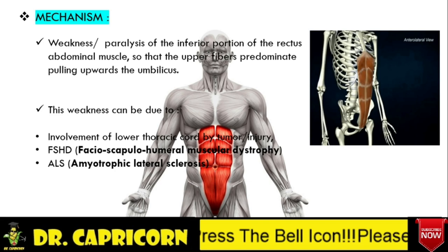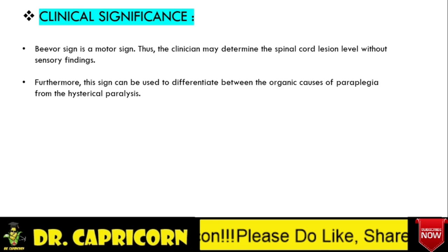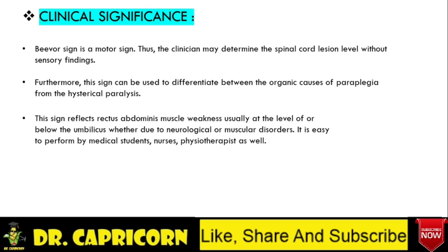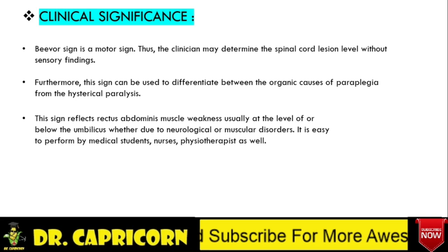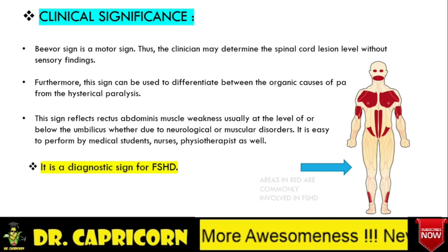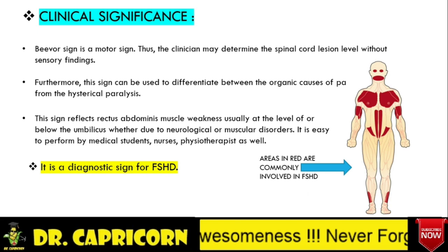Clinical significance of Beaver sign: Beaver sign is a motor sign. Thus, the clinician may determine the spinal cord lesion level without sensory findings. Furthermore, this sign can be used to differentiate between organic causes of paraplegia from hysterical paralysis. This sign reflects rectus abdominus muscle weakness, usually at the level of or below the umbilicus, whether due to neurological or muscular disorders. It is easy to perform by medical students, nurses, and physiotherapists as well.